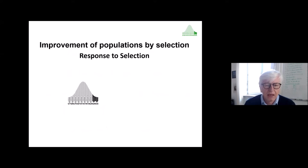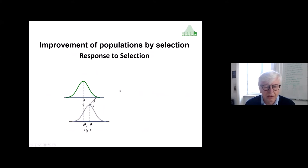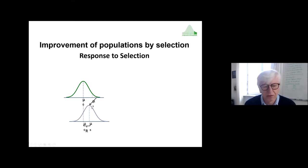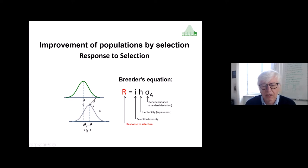Going a bit further into the formulas: when we consider the response to selection, we think of a normally distributed population from which we select the best part to form a new population in the next generation. The mean of the selection fraction is probably higher than the mean of the next generation, and the difference between the original and new populations is the response to selection. This is calculated as the selection intensity times the square root of heritability times the square root of genetic variance.